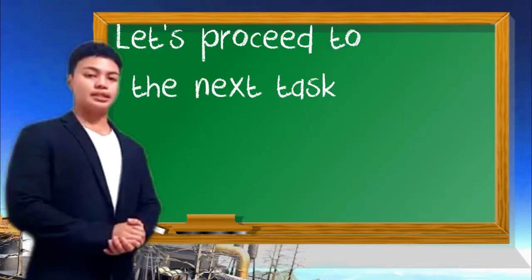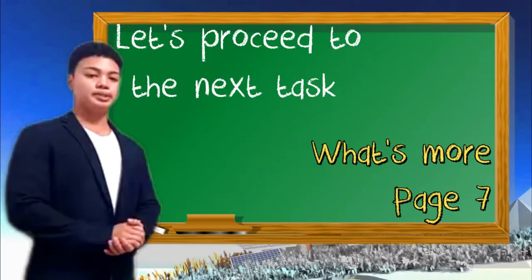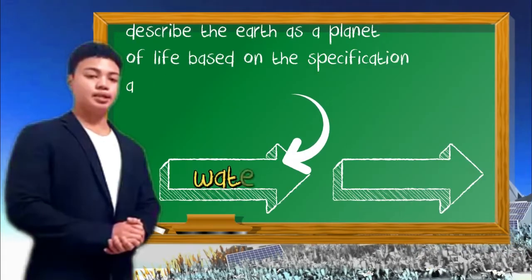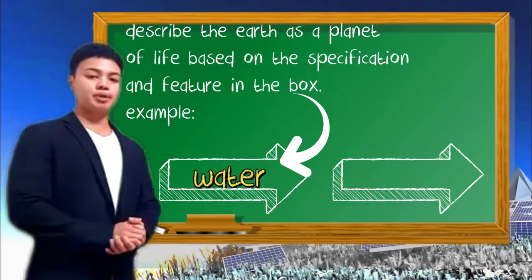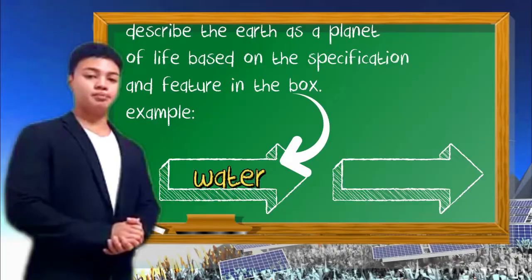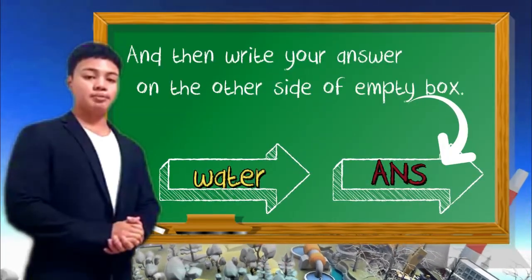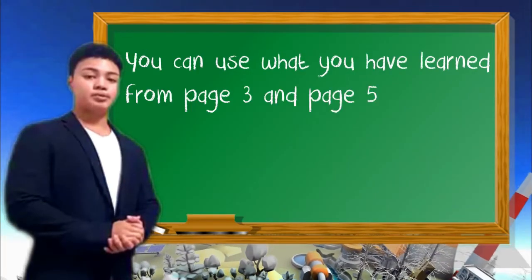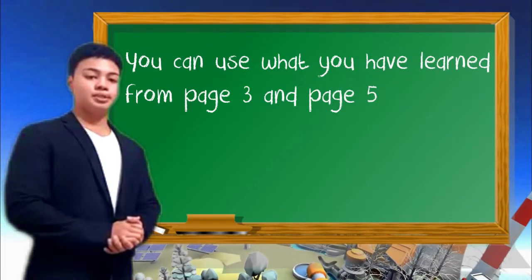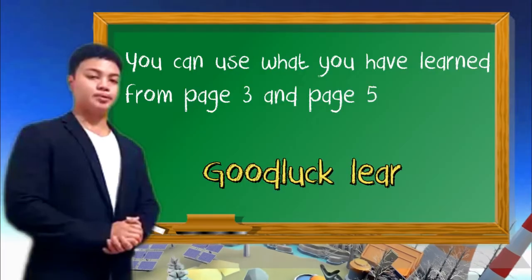Let's proceed to the next task on page 7. For this activity, describe the Earth as a planet of life based on the specification and picture in the box. Then, write your answer on the other side of the empty box. For this activity, you can use what you have learned from page 3 and page 5. Good luck learners!